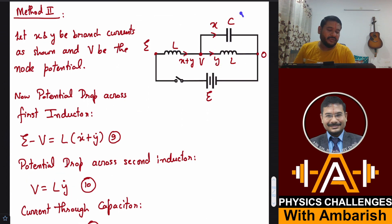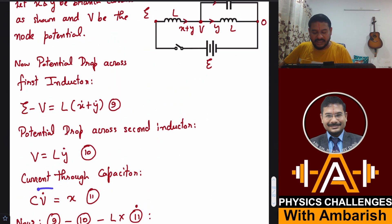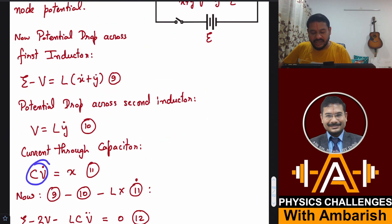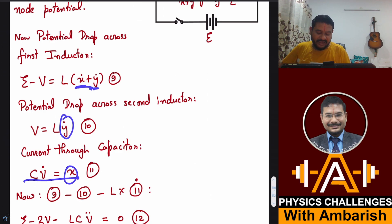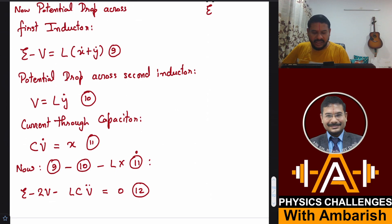For the capacitor, the voltage is V, so charge = CV and current through it = C·V̇. To eliminate ẋ and ẏ: subtract equation 10 from equation 9 to cancel L·ẏ; then differentiate the capacitor current relation and multiply by L to get an L·ẍ term. Subtracting, we eliminate both ẋ and ẏ from the three equations.